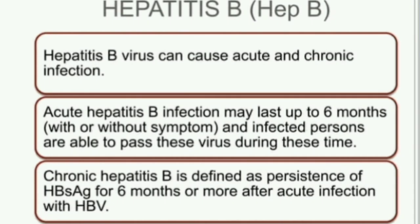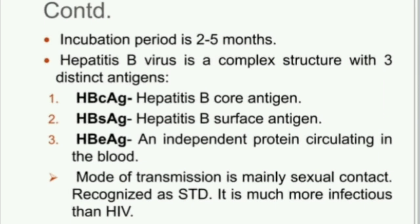Hepatitis B virus can cause acute and chronic infections. Acute hepatitis B infection may last up to six months with or without symptoms, and an infected person is able to pass the virus during this time. Chronic hepatitis B is defined as persistence of HBsAg for six months or more. The incubation period is two to five months. The Hepatitis B virus has a complex structure with three distinct antigens: HBcAg, HBsAg, and HBeAg — a core antigen, surface antigen, and an independent protein in circulation.